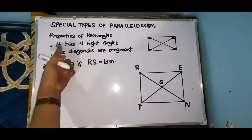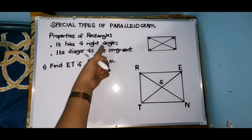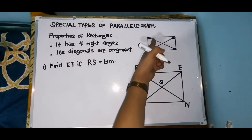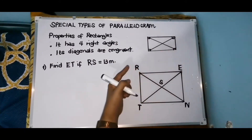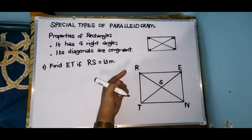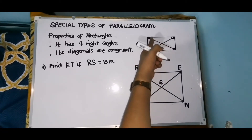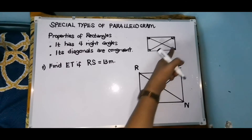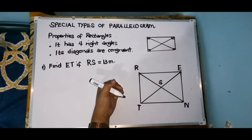The first property: it has four right angles. Ito yung kanyang four right angles — you have here one, two, three, four. Pag sinabi natin yung right angles, ang measurement ay exactly 90 degrees. Kung ito ay 90, so meron kang apat. Ang interior angles ng isang rectangle ay 360 degrees.